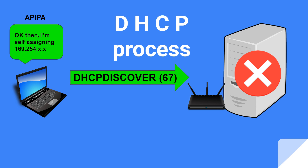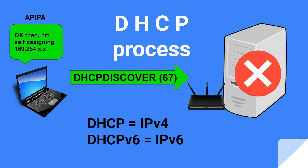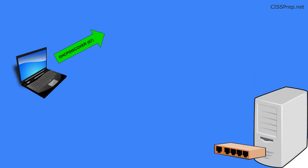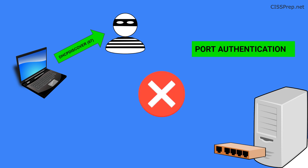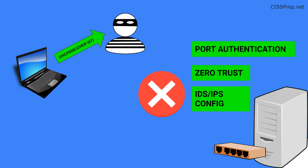DHCP version 6 uses IP version 6 addresses. One of the risks related to DHCP would be rogue DHCP services — in other words, something pretending to be the DHCP server. Countermeasures would be port authentication of MAC addresses for all workstations, a zero-trust architecture, or configuring your intrusion prevention system to drop any unauthorized packets.